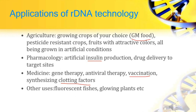Applications of recombinant DNA technology in different fields: In agriculture, it is used for production of transgenic plants with improved qualities like insect and graft resistance and nutritional enrichment. In pharmacology, it is used for insulin production and drug delivery to target sites. In medicine, it is used for gene therapy, antiviral therapy, and vaccination — for production of vaccines like hepatitis B vaccine — and for synthesizing clotting factors. Other uses include fluorescent fishes and glowing plants.